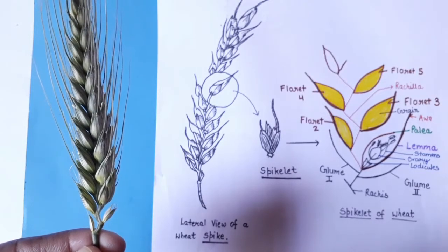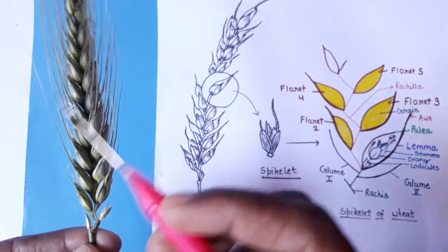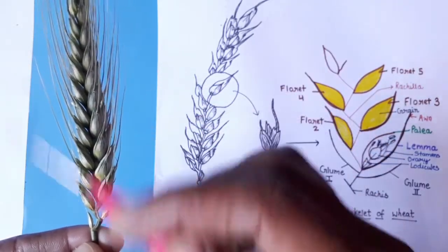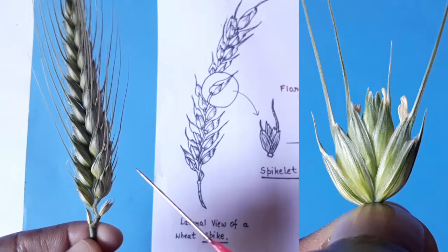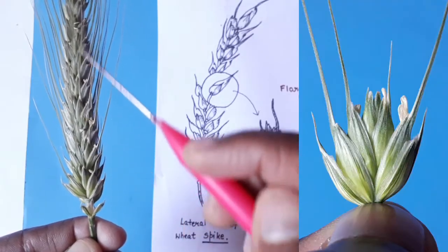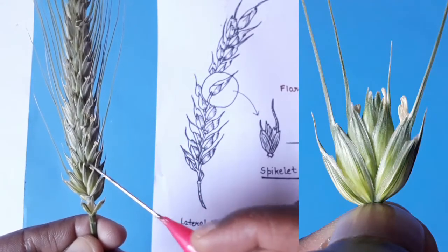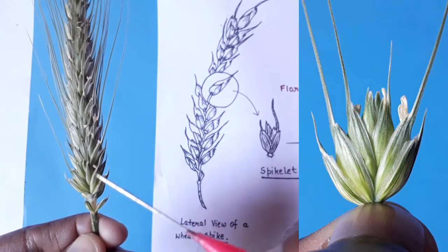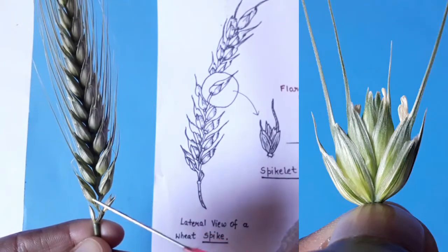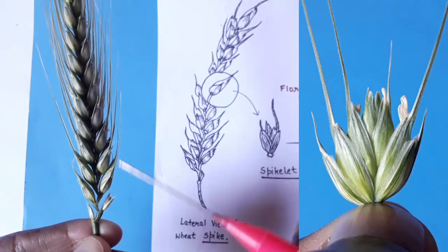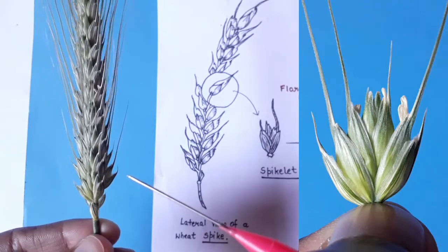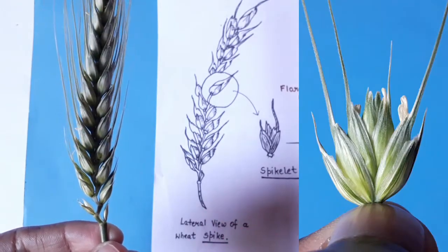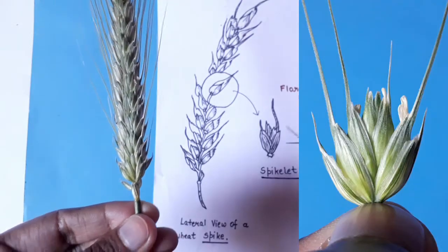If you look at the inflorescence from different angles, you can see the spikelets arranged alternately over a common axis — this whole structure is called a spike. If you rotate the inflorescence to a certain angle you see a different view, and from another angle you get a planar view, giving a more interesting appearance. You can see clearly how the spikelets are arranged overall.